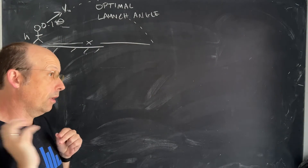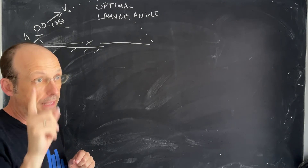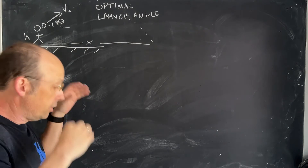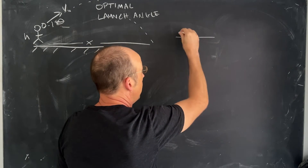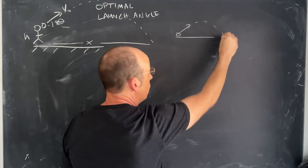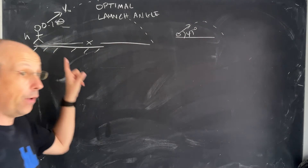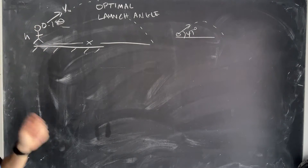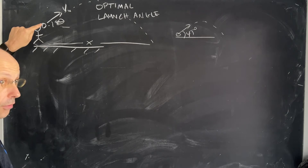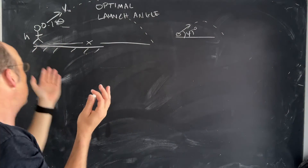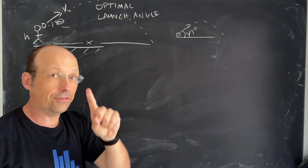I did a problem about a shot put launched at a 38 degree angle, and the problem said that's the optimal angle. As I've said before, if you launch an object from ground level and ignore air resistance, the maximum distance is achieved at 45 degrees. However, for a shot putter, the ball is not launched from the ground — it's launched from some height above the ground. So 45 degrees is not the optimal angle.